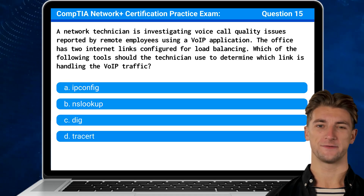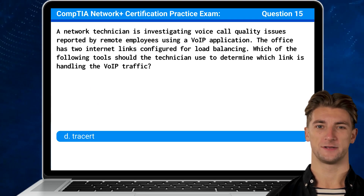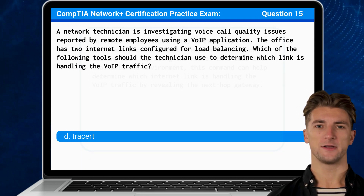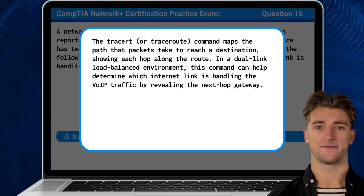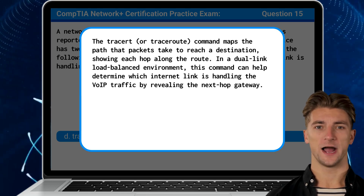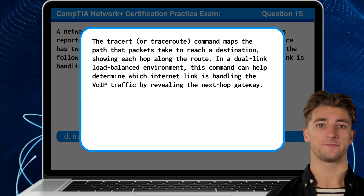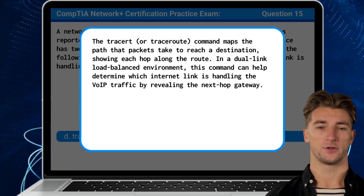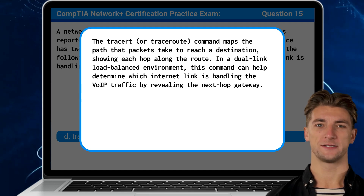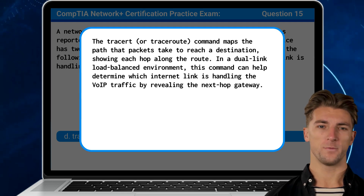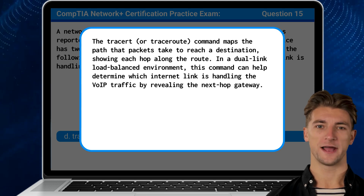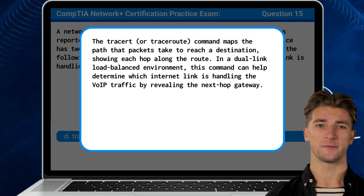The answer is D — TraceRT. The TraceRT command maps the path that packets take to reach a destination, showing each hop along the route. In a dual-link load-balanced environment, this command can help determine which internet link is handling the voice-over-IP traffic by revealing the next hop gateway.